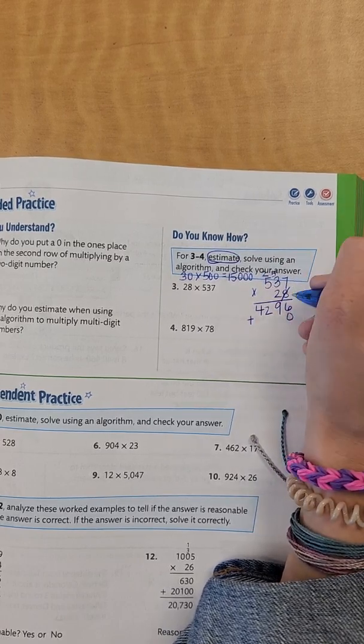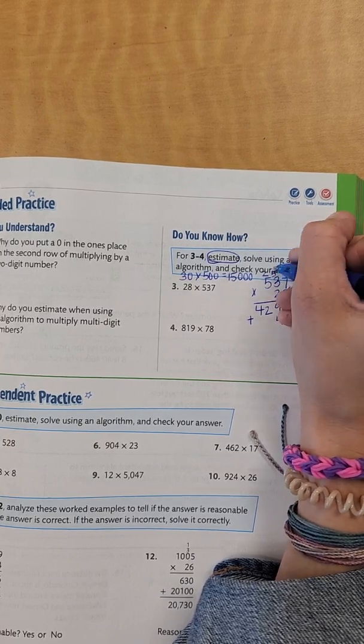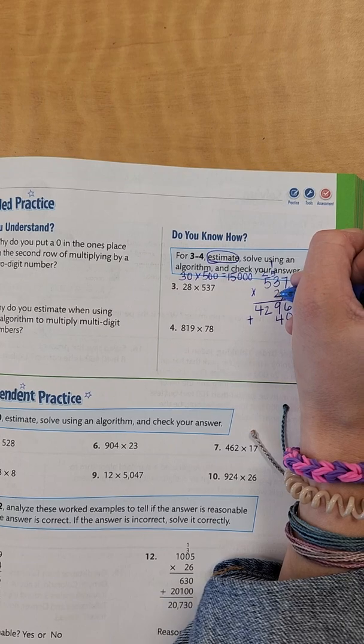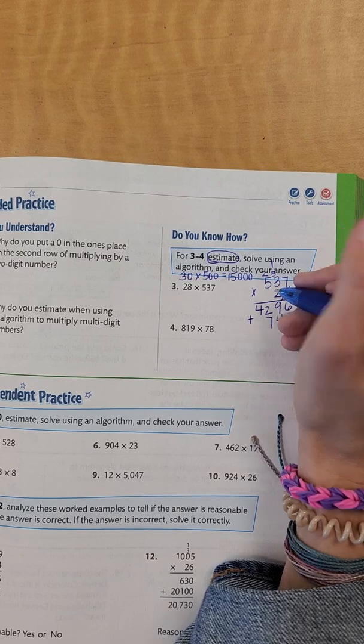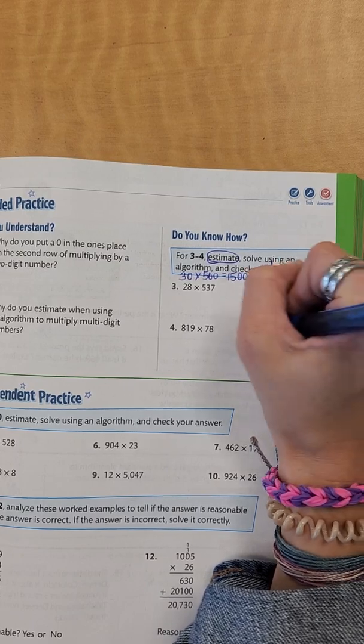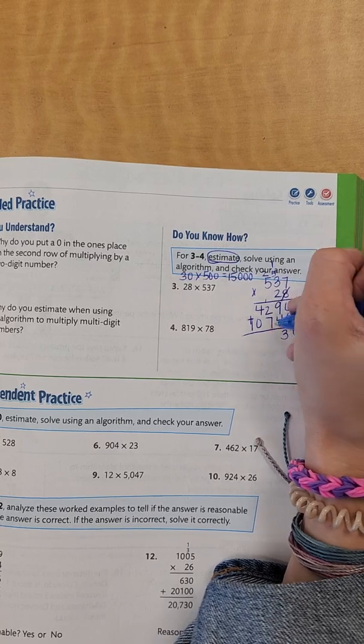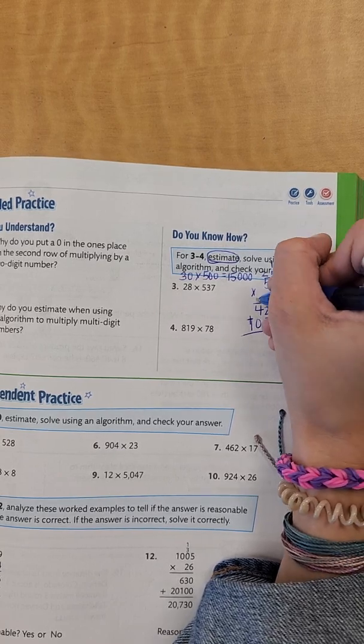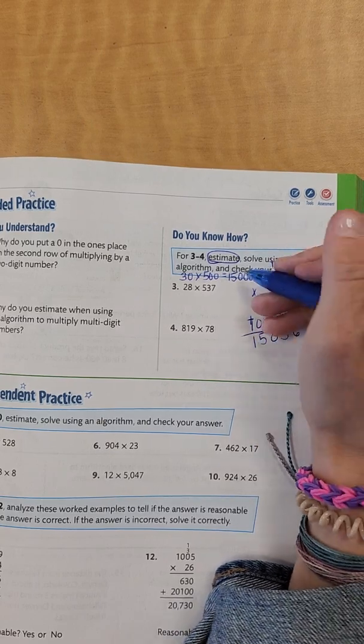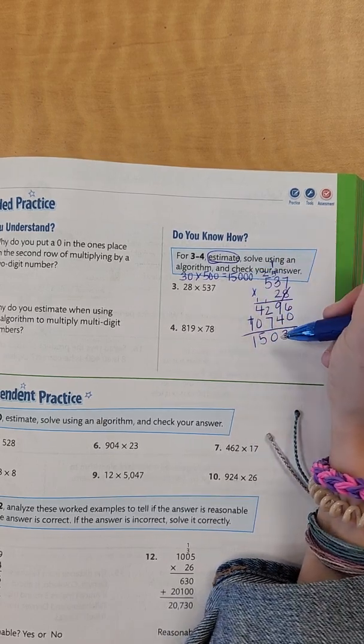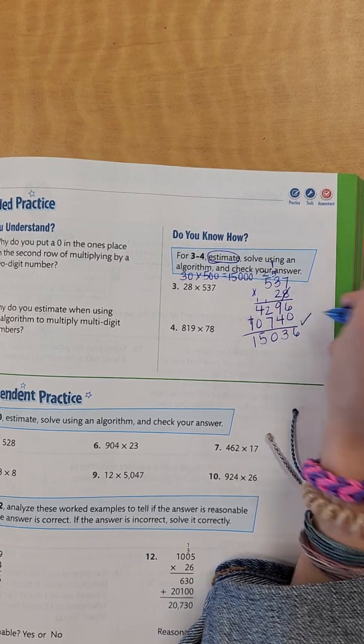Bring down my 0, cross out my 8. 7 times 2 is 14, put down my 4, regroup my 1. 3 times 2 is 6, plus 1 is 7. 2 times 5 is 10. Now I'm adding 6, 13, 7, 8, 9, 10, regroup, 4 plus 1 is 5, and a 1. So I can see that my answer is very close to my estimate, so I know that that would work.